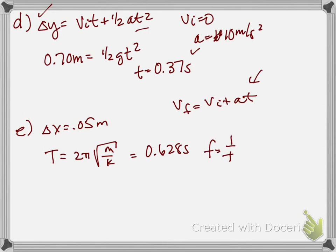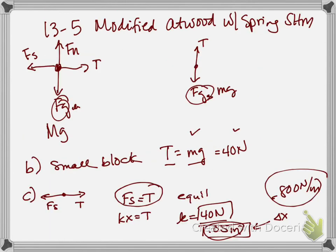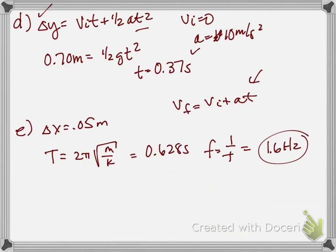So, the period that I got was 0.628 seconds. The frequency is just one over the period so that gave me 1.6 hertz. Two points there. One for a correct approach and one for a correct substitution of K. Remember, we found K back here in part C. So, two points for part E.